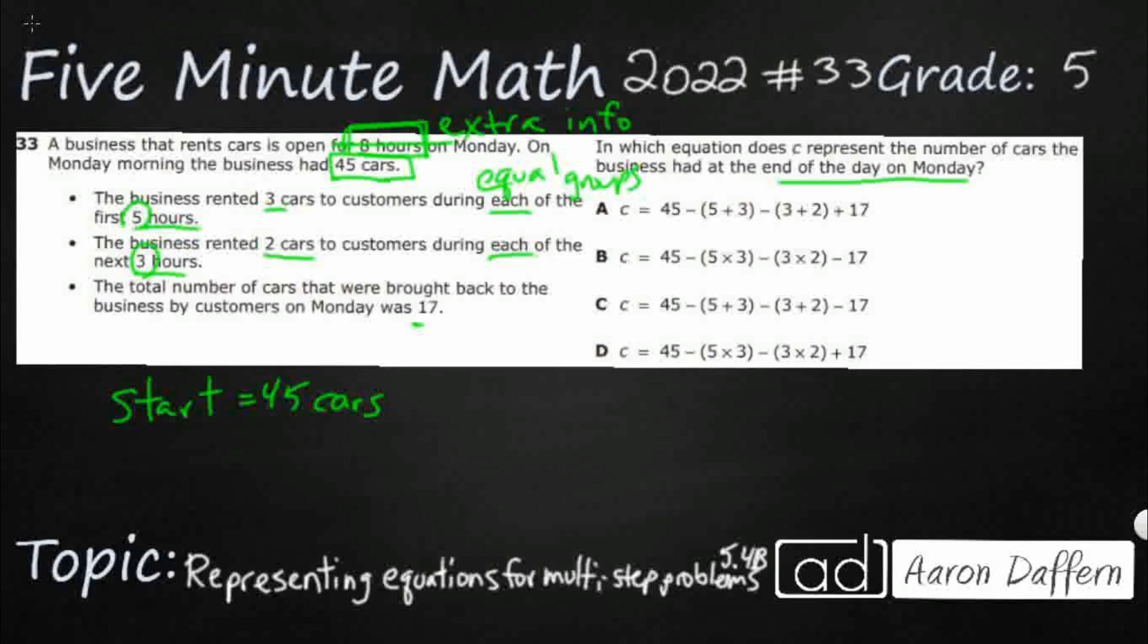Now in these first two dots, right, we've got three cars for each of the first five, two cars for each of the next three. That's helpful information, but we don't really need that eight. And as you can see in our answer choices, eight's not even showing up in any of them, right?